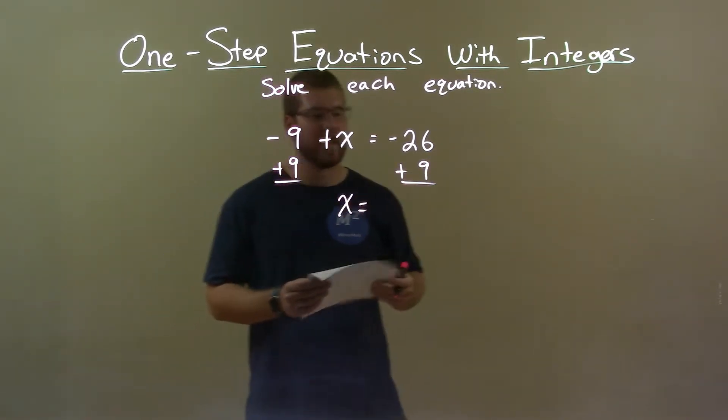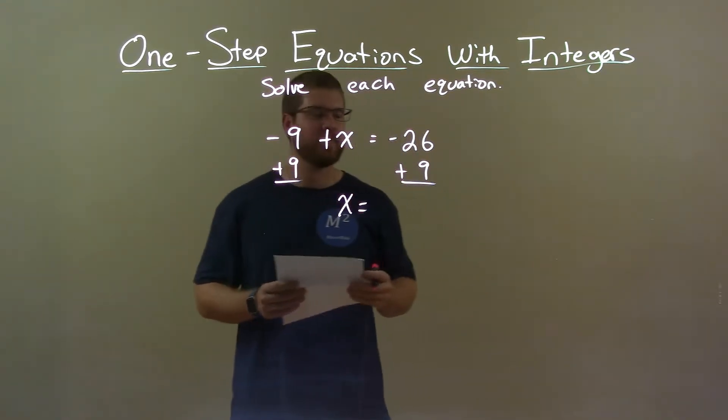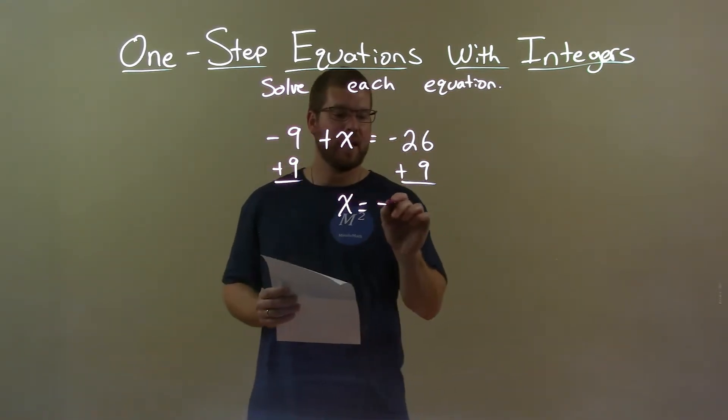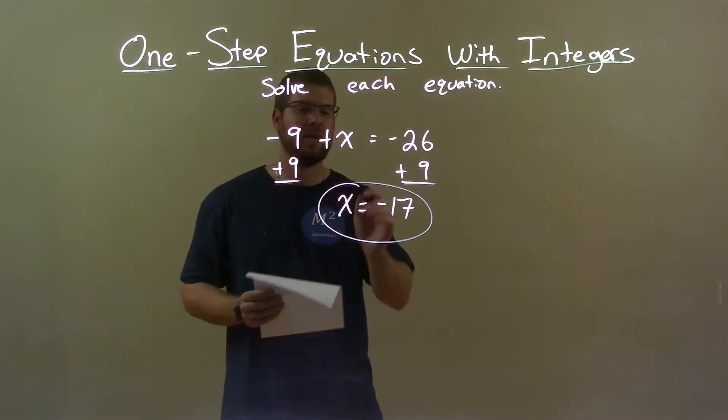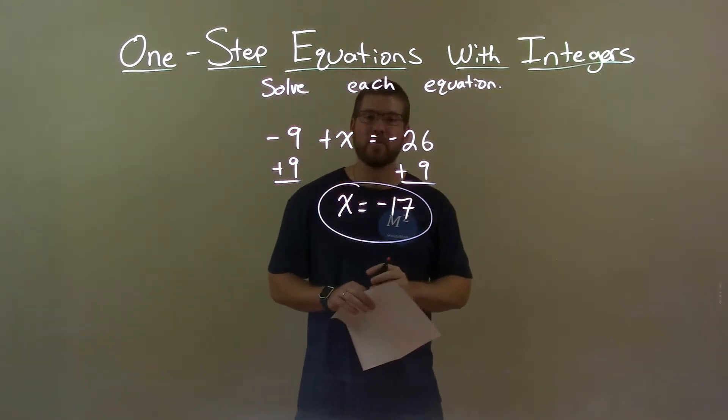I have x now by itself, but I have negative 26 plus 9. Negative 26 plus 9 is negative 17. So our final answer is x equals negative 17.